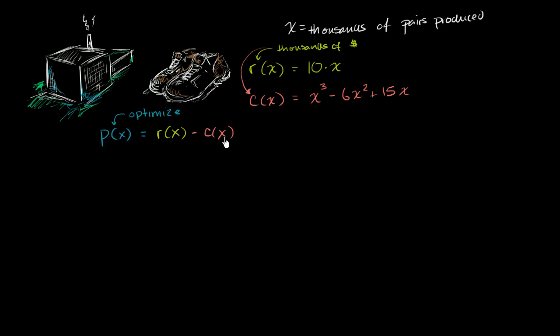So what is it? We know what r of x is and what c of x is. This is 10x minus all of this business. So minus x to the third plus 6x squared minus 15x. And then we can simplify this as, let's see, we have negative x to the third plus 6x squared minus 15x plus 10x. So that is minus 5x. So p(x) = -3x² + 12x - 5.